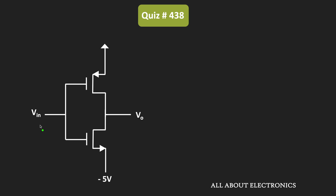We know that for the inverter, when the input is equal to logic 0 then its output is equal to logic 1, and whenever the input is equal to logic 1 then its output is equal to logic 0. This logic 1 and logic 0 correspond to the supply voltage which is connected with the circuit.